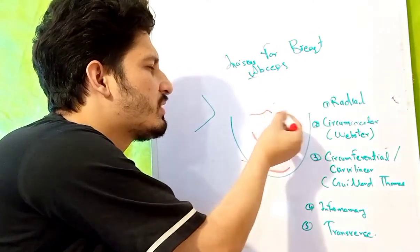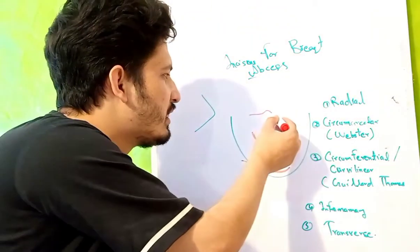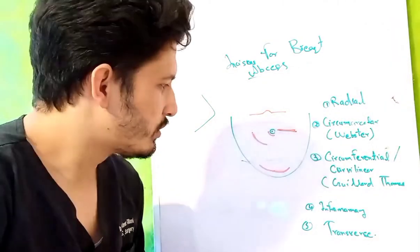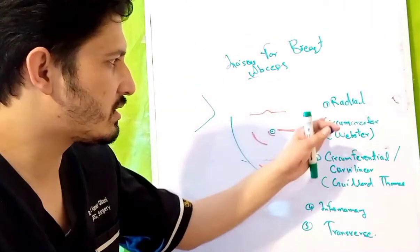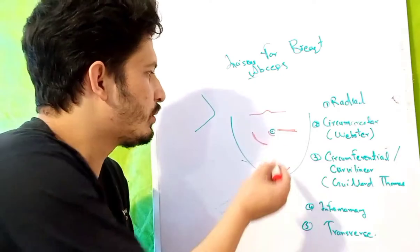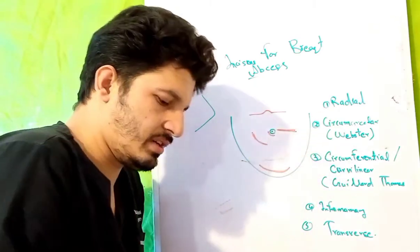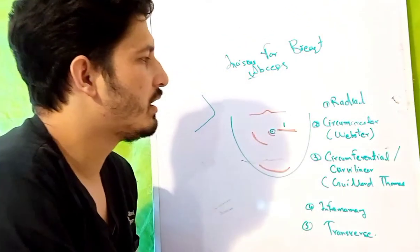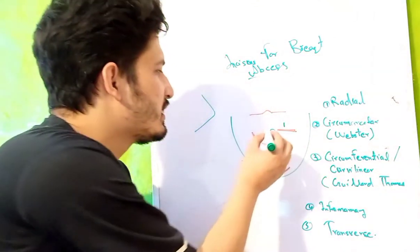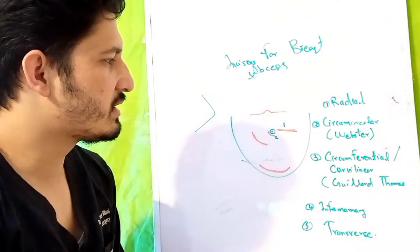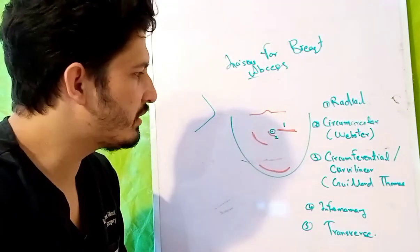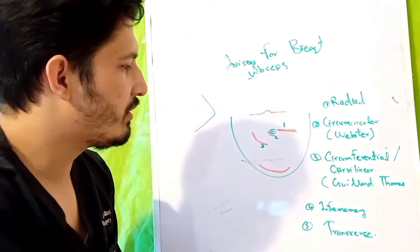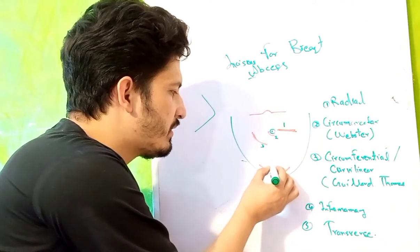Finally, the last incision is the transverse incision — it is transverse but curvilinear, placed in the middle. To summarize: the first incision is the radial incision, the second is the circumareolar incision, the third is the circumferential or Gillard Thomas incision, and the fourth is the inframammary incision at the inframammary fold.